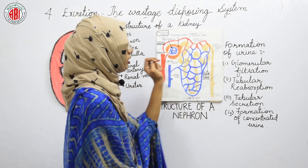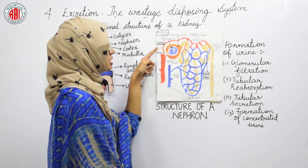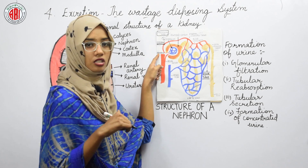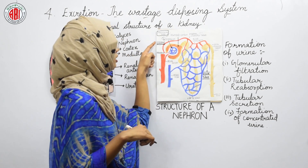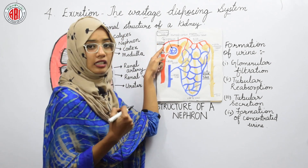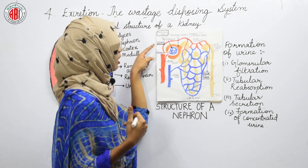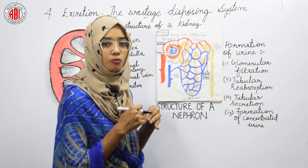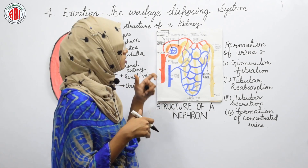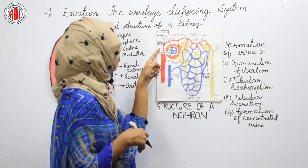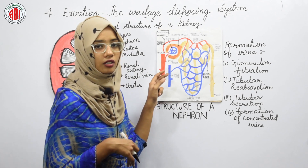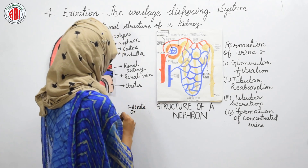The first step — glomerular filtration — starts in the glomerulus. Blood from the afferent arteriole reaches the glomerulus. The afferent arteriole is broader, so more blood flows in, but when it reaches the efferent arteriole, which is narrow, it creates blood pressure. That pressure causes ultrafiltration of the blood in the glomerulus. The filtrate resulting from ultrafiltration is called the filtrate or primary urine.